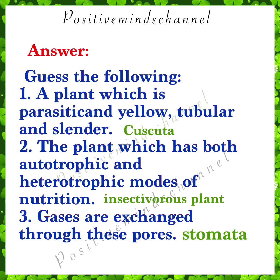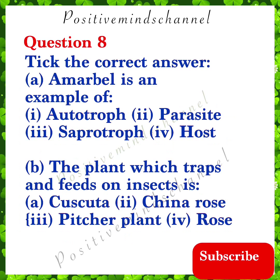Question 7: Guess the following. A plant which is a parasite, with yellow, tubular, and slender features — the answer is Cuscuta. The plant which has both autotrophic and heterotrophic modes of nutrition — the answer is an insectivorous plant. Gases are exchanged through these pores — the answer is stomata.